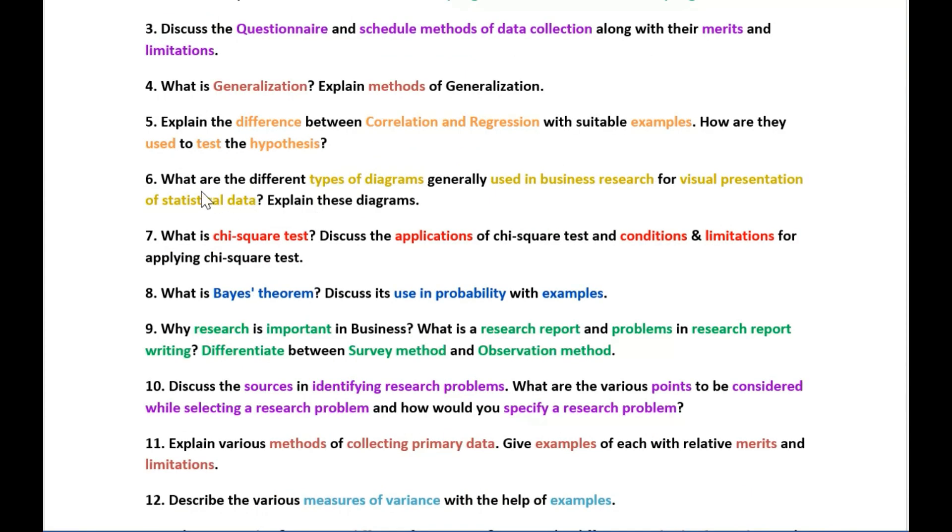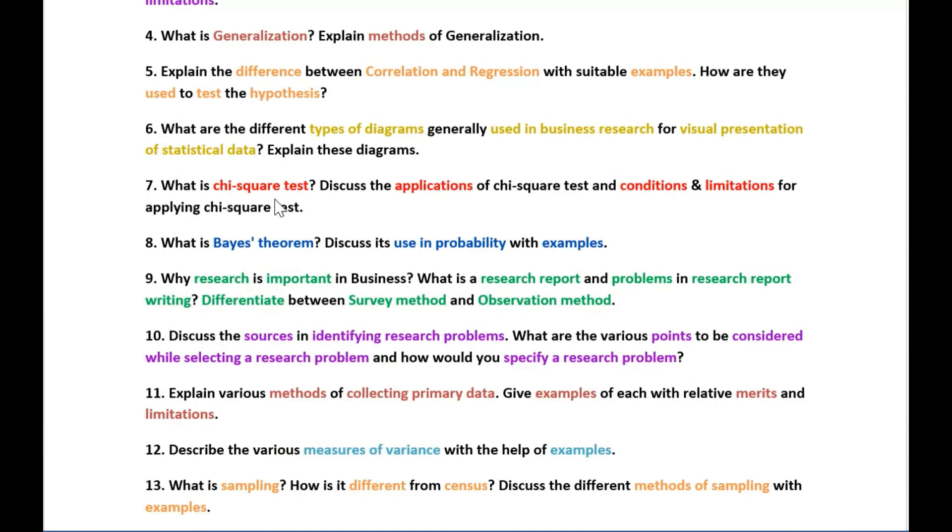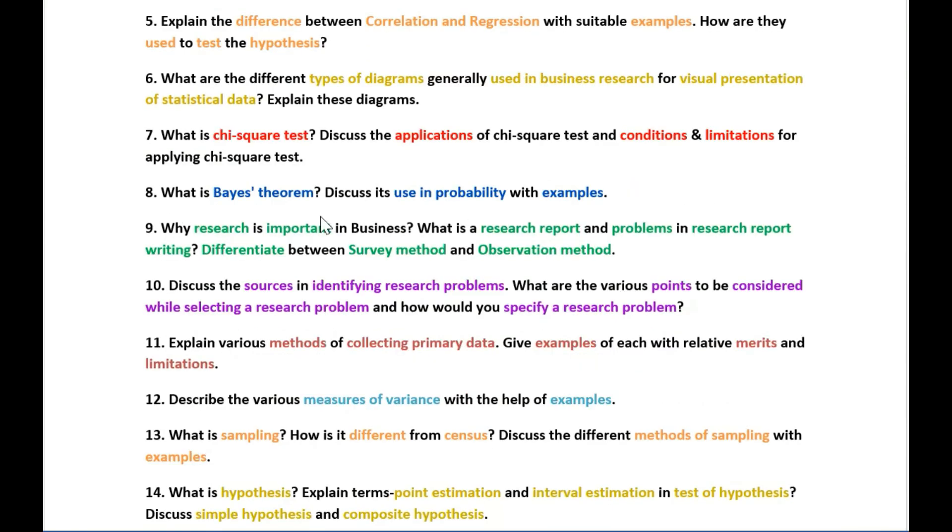The next question is on types of diagrams used in business research for visual presentation of statistical data. The next question is on chi-square test and discuss the applications of chi-square test and conditions and limitations of chi-square test. The next question is on Bayes' theorem and what are its uses in probability, explain it with examples.